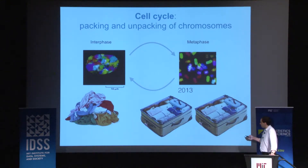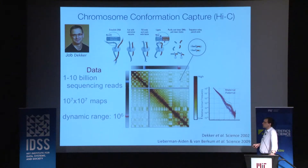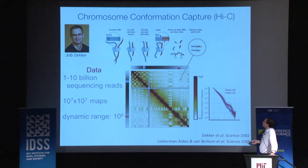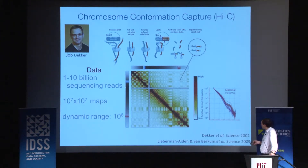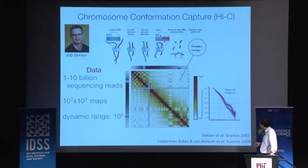A method that really changed this whole field is called chromosome conformation capture, historically called 3C — and then there are incarnations called 4C and 5C, with the pinnacle being Hi-C. The Hi-C method was developed by Job Decker while he was a postdoc with Nancy Kleckner at Harvard, and then further developed here at MIT jointly with Job Decker, who is at UMass Medical Center in Worcester, in 2009.